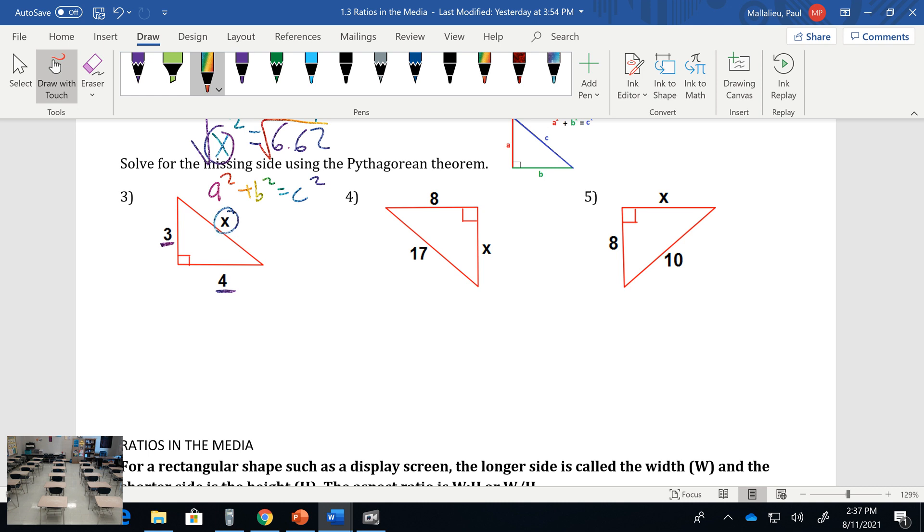In this case, 3² plus 4² equals our hypotenuse squared. So 9 plus 16 equals x², 25 equals x², square root both sides, x equals 5. That tells us our missing side or hypotenuse is 5.